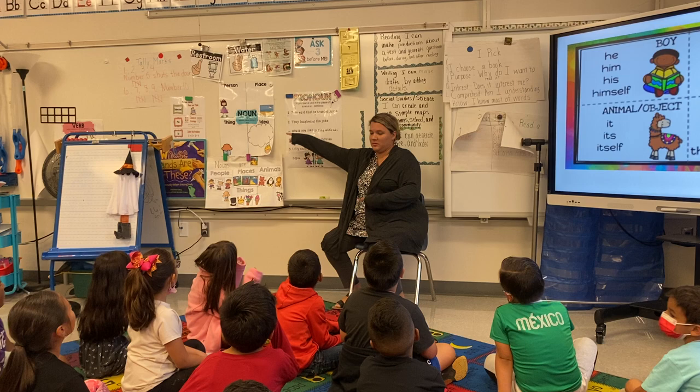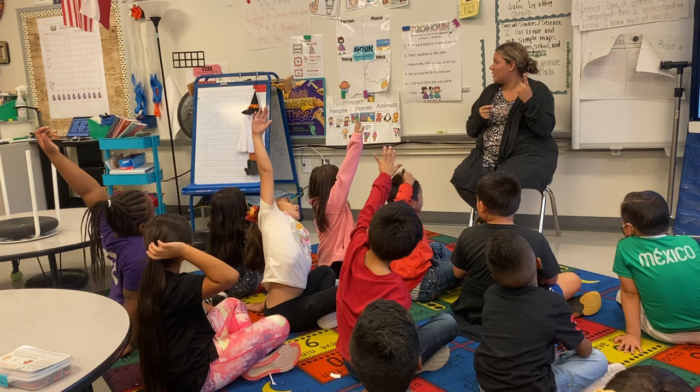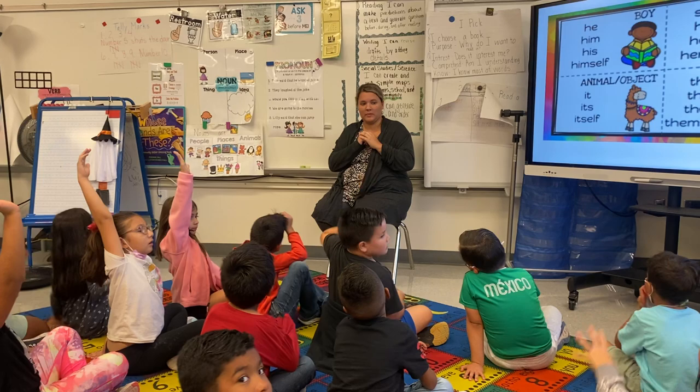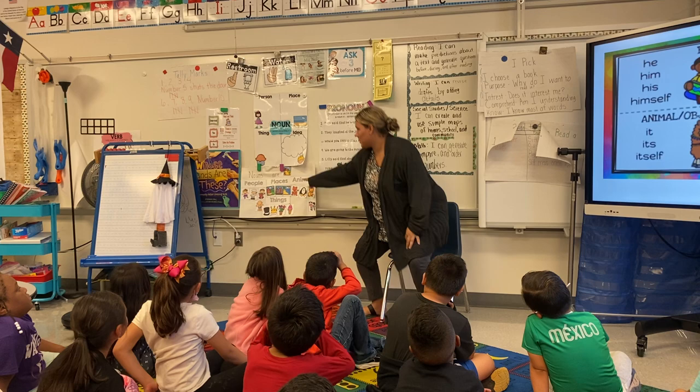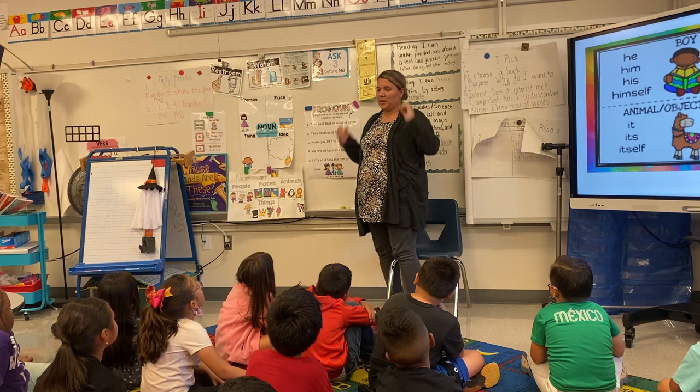Guys, remember a couple weeks ago we went over nouns? Raise your hand if you can tell me what a noun is. Layla? A thing. A person. Animals or things. What else? There's one more I'm looking for. Rowan: Place. There's person, place, thing, or idea. Remember the chart we did? We did the people, places, animals, names, and ideas as well.